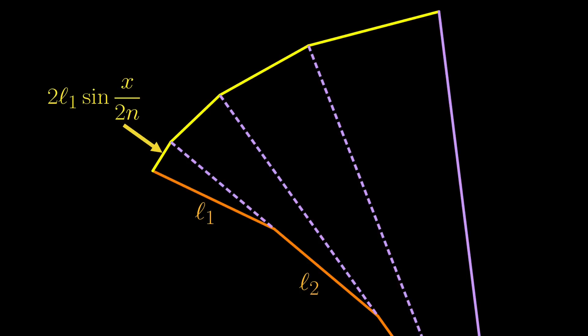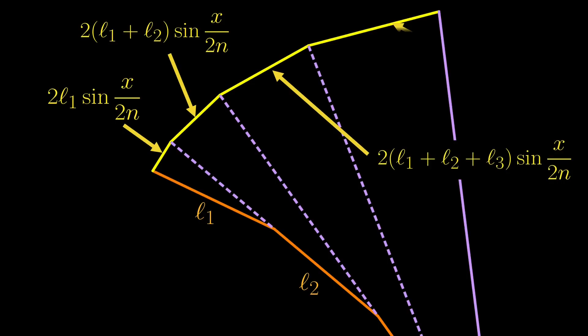Next up, we get this bigger isosceles triangle. This time, however, the leg has length l1 plus l2, so this part of the involute has length 2 times l1 plus l2 sin x over 2n. Very similarly, we can compute the lengths of the other parts of the involute. So we now know how to go from one involute to the next, and here is the summary.